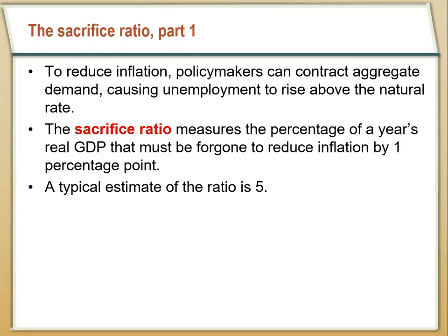This downward sloping Phillips curve can present a real challenge to policymakers. What the Phillips curve says is that, all else equal, for the Fed to bring down inflation, they have to decrease aggregate demand. They have to engage in some kind of contractionary policy that's going to shift aggregate demand to the left, causing higher unemployment and lower output.